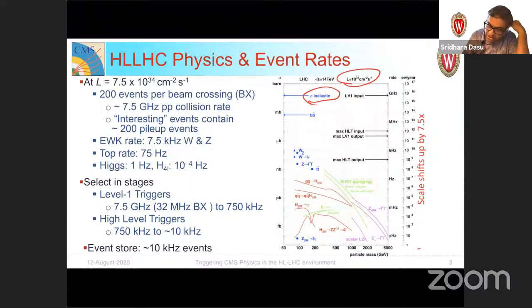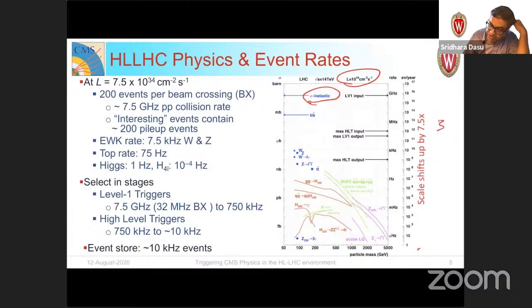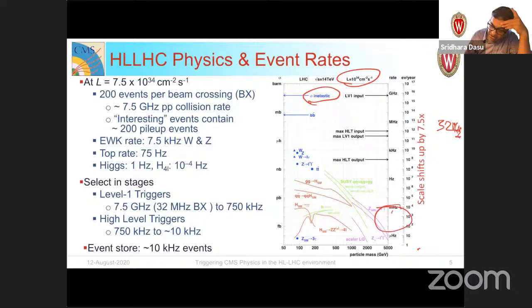The minimum bias inelastic cross section is very high — in the millibarns — so the rate of production of events is about 10^17 per second. However, 32 MHz is the bunch crossing rate, which is the rate at which you see events. The physics of interest, like Higgs production processes or Higgs to four leptons, sits at rates in the tens of millihertz — extremely rare processes that we somehow need to select.